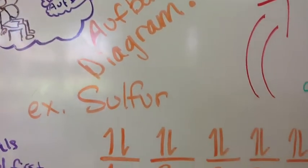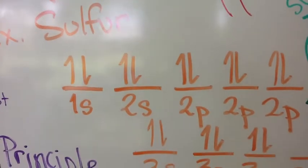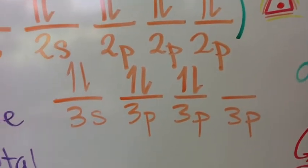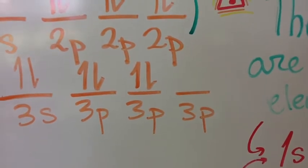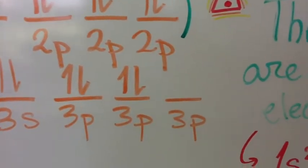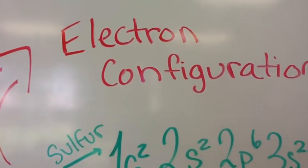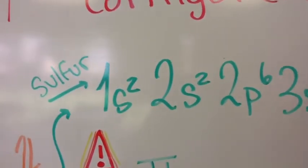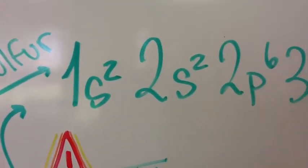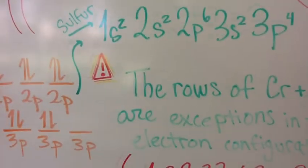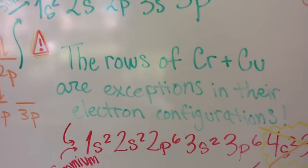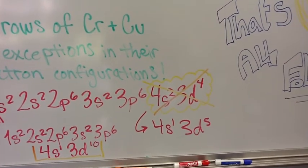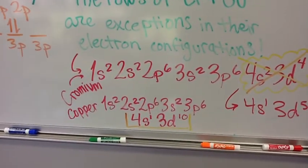This is an Aufbau diagram — the visual representation of an electron configuration. First you fill the S sublevels, then the P sublevels, then another S, and however many P electrons remain. You number each sublevel, and denote however many electrons are in the sublevel with a superscript. Be careful, though: chromium and copper are exceptions. Chromium should be 4s¹ 3d⁵, and copper should be 4s¹ 3d¹⁰.